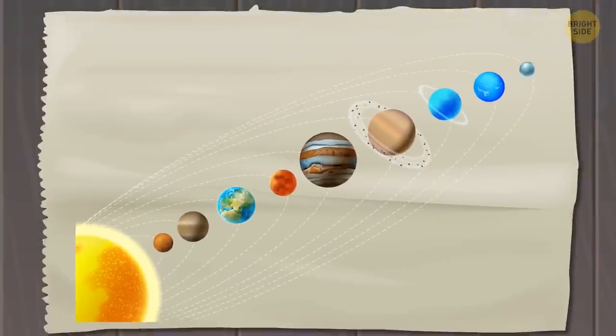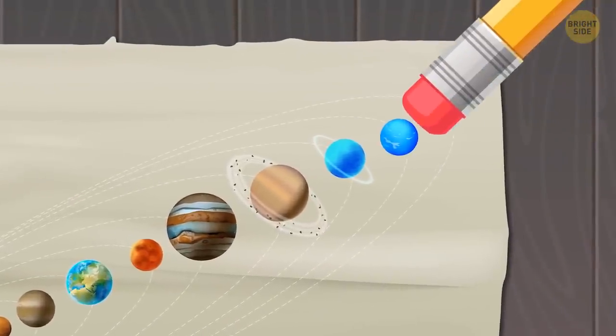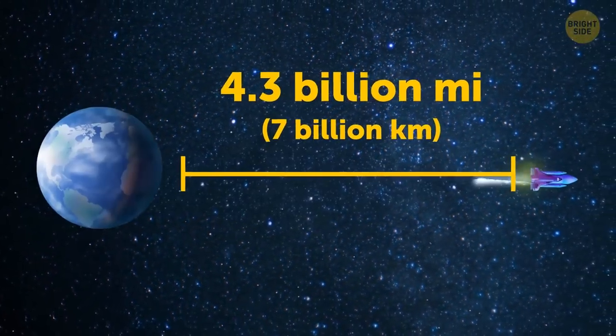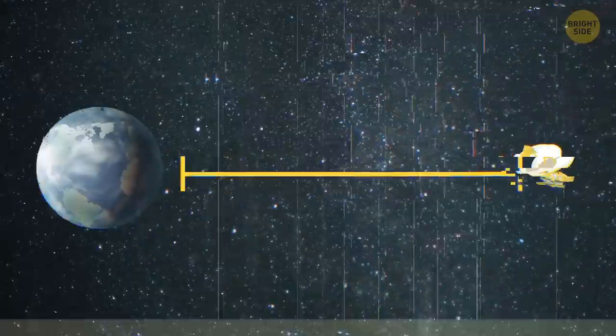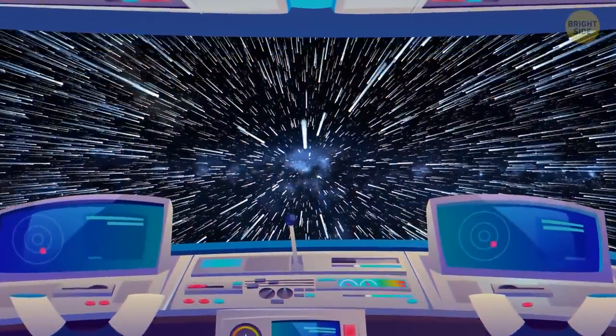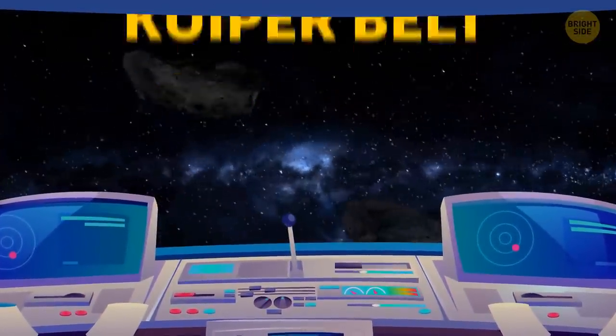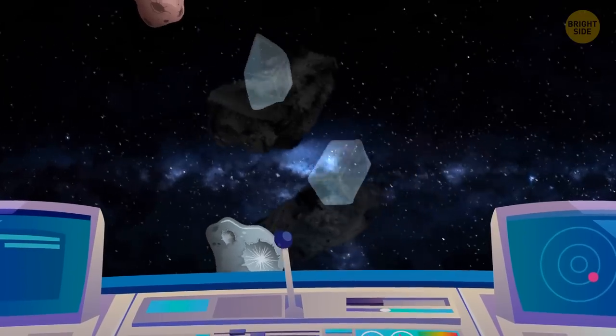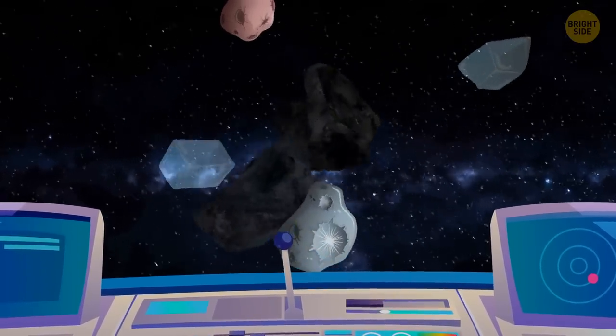It was once considered a full-fledged planet, but now it's not even on the list. After that, we're 4.3 billion miles away from our home. It took the New Horizons space probe about nine years to get here. Hold on to your seat. We are speeding up! We're passing through the Kuiper belt. There are lots of asteroids and blocks of ice here. These are some of the oldest building materials in our solar system.